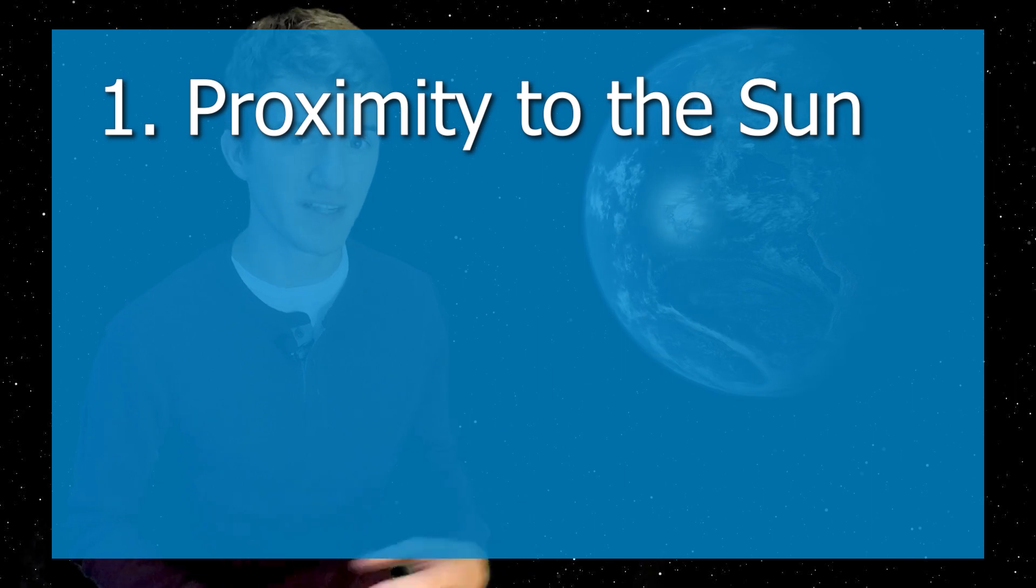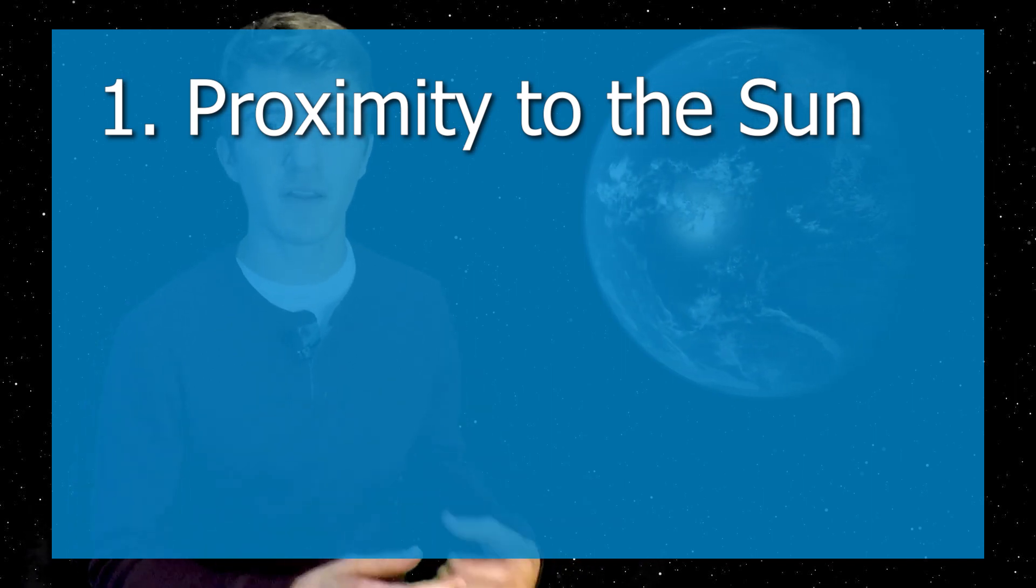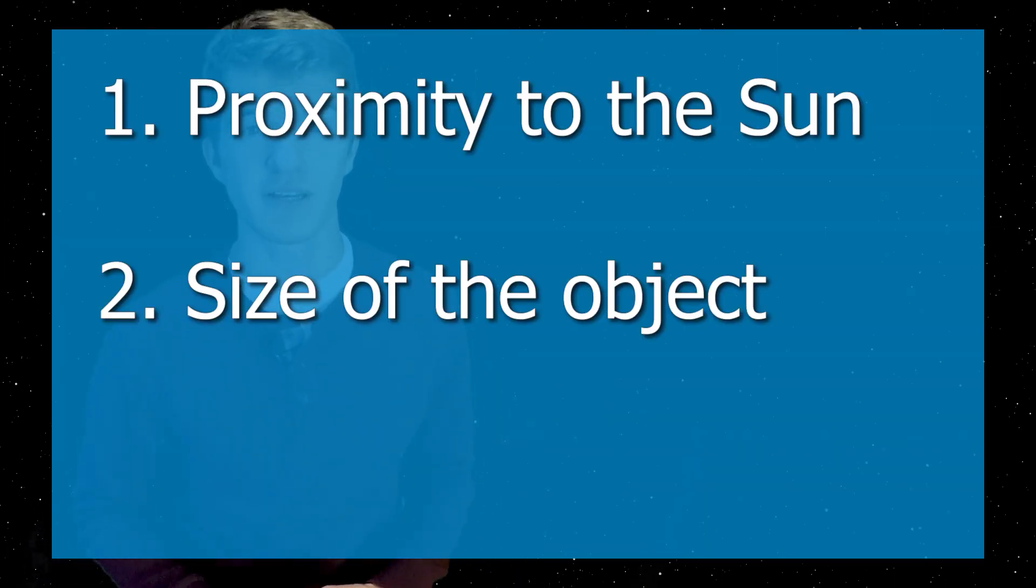So there are three main concepts that define how bright an object appears here on Earth. The first one being the object's proximity to the sun itself. The closer it is to the sun, the brighter it will appear. So the planets such as Mercury and Venus, the two closest planets to the sun, appear very bright here on Earth just because they are that close. Then another factor that comes into play is how large the object is. The bigger the object, the more sunlight it's able to reflect, which is why we're able to see planets such as Jupiter and Saturn with our naked eye, just because they are so massive.